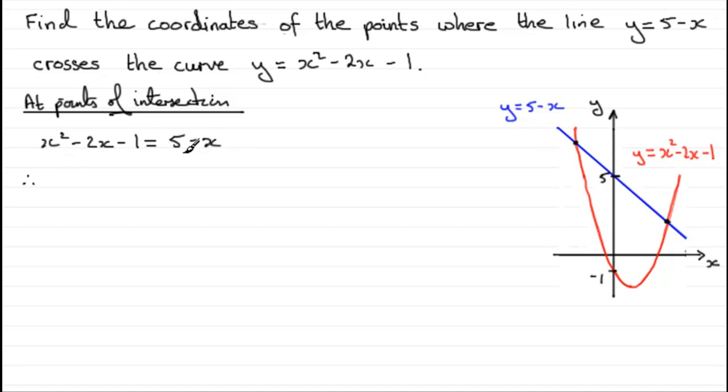So we just need to add x to both sides. So we're going to have x squared minus 2x plus another x. That's going to be minus x. And then we've got minus 1, and if we subtract 5 from both sides, we've got minus 6 equals 0.